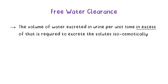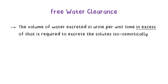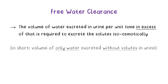Free water clearance can be defined as the volume of water that is excreted in urine per unit time in excess of that required to excrete the solutes iso-osmotically. In short, the volume of water only which is excreted without solutes in urine. In other words, the water excreted in urine without solutes is called free water clearance.